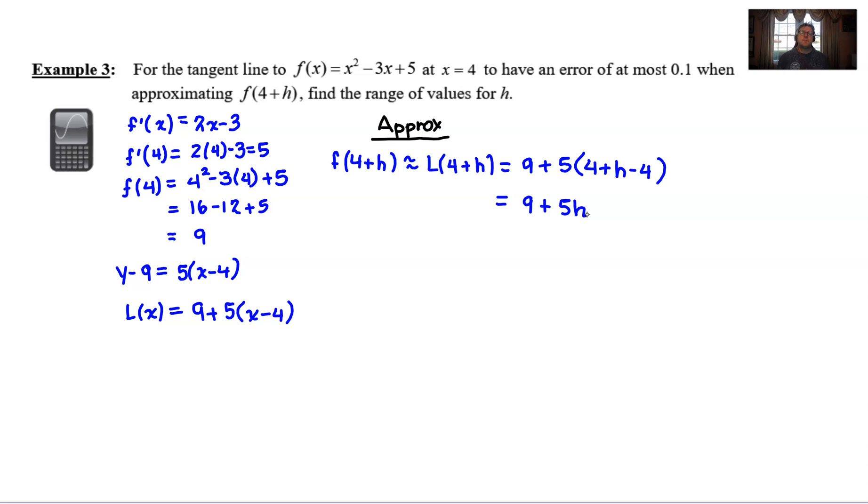Now if you remember back to what error means. In video 2, we talked about how the error is just simply the absolute value of your approximation minus your exact. And I could even throw that in down here. So we're talking the absolute value of the approximation minus the exact. Or I could flip this around and say exact minus approximation. It really doesn't make any difference.